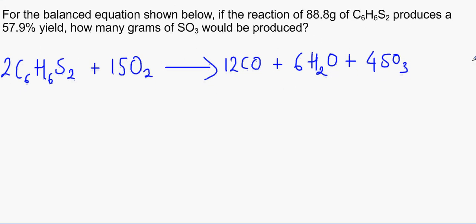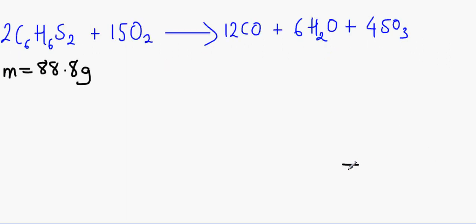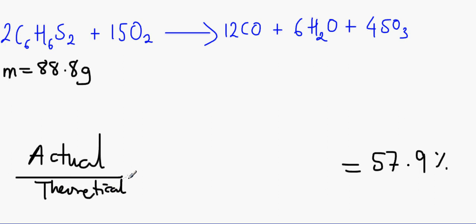Okay, so what we've got to do, first things first, is to write down information that we know. So we know that the mass of this is 88.8 grams and we know that the percentage yield is 57.9. We can work backwards from here. We know that we usually do actual over theoretical times by 100. So if we just divide this by 100, we would get 0.579. So we know that the actual divided by theoretical equals 0.579.